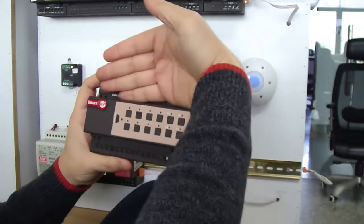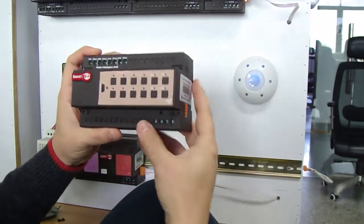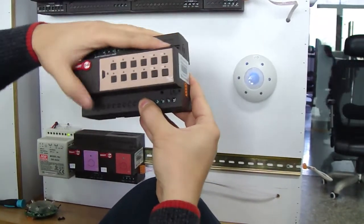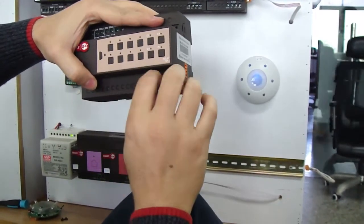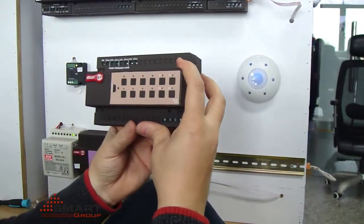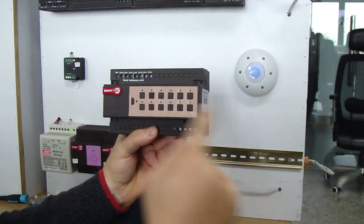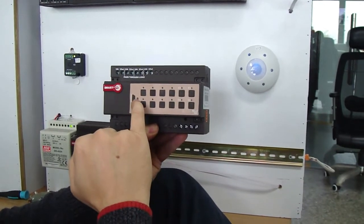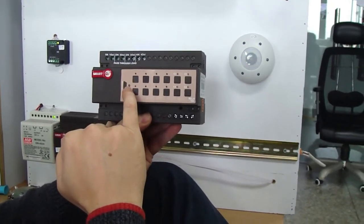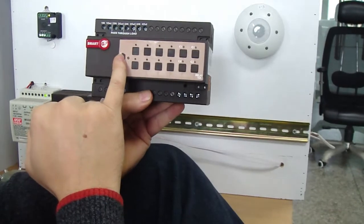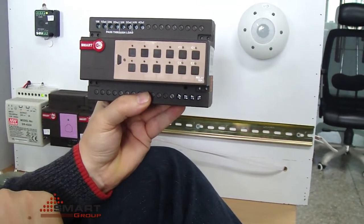After all the distribution board is covered by different plates, usually you don't see anymore the programming buttons or the broadcasting buttons. So instead of you opening the whole distribution board again, we have brought the status LED to the front and also the broadcast LED to the front as we can see now.